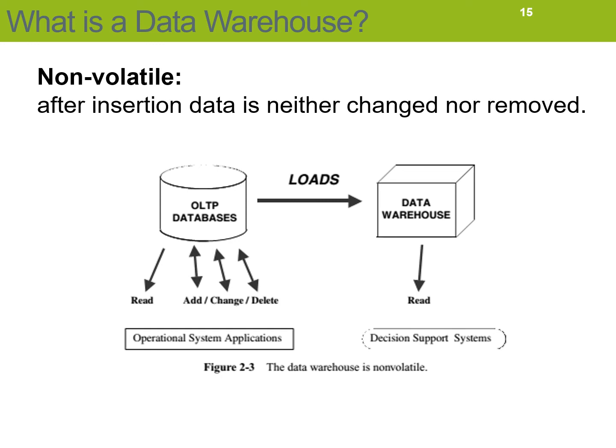The data warehouse is non-volatile. Unlike OLTP systems, after inserting data into the data warehouse, it is neither changed nor removed by definition. The only exceptions are when false or incorrect data is inserted or when the warehouse capacity is exceeded and archiving becomes necessary. In OLTP systems you can read, change, and delete, but in a data warehouse you can only read.